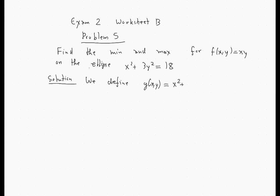And then the method of Lagrange multipliers tells us that we should consider the system in order to find the critical points. That is, the gradient of F is lambda times the gradient of G, and G should be equal to zero.